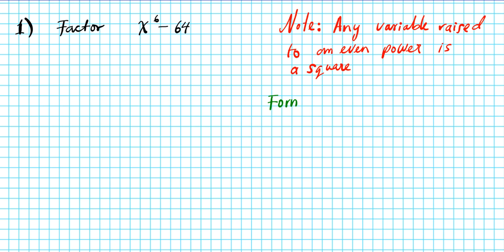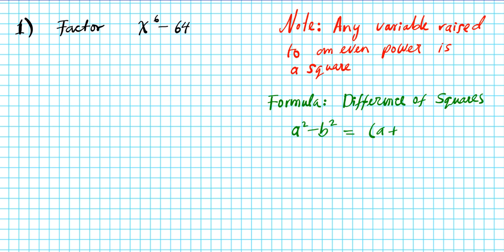Let's refresh our memories on the difference of squares formula. The difference of squares formula is: a squared minus b squared equals (a plus b) times (a minus b). All you simply do is take the square root of the first and second term and express your roots as a sum and a difference. Note that if you have a sum of squares, the expression is not factorable — it is prime.